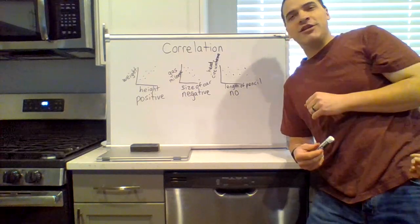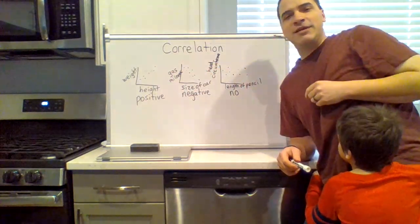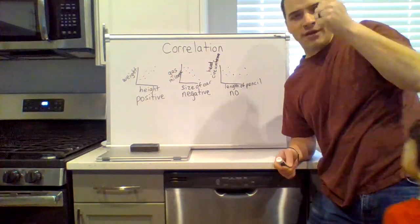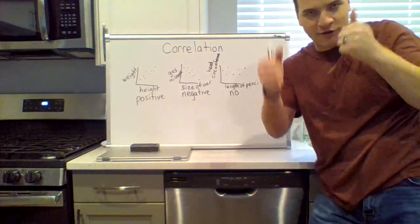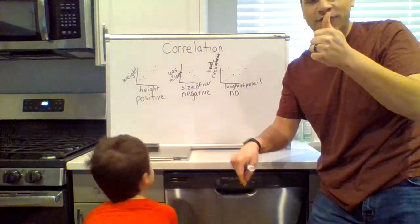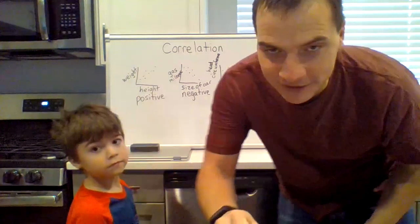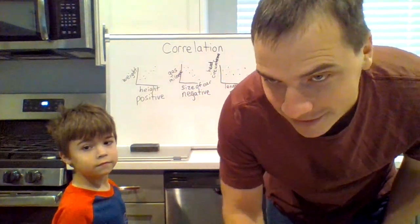Think about correlation. You're going to have to decide what the graphs look like and also think about variables. As one goes up, does the other go up? That's positive correlation. Or if one goes up, the other goes down, that's negative correlation. Or they have nothing to do with each other, that's no correlation. Thank you. Say bye Nathan. Bye.